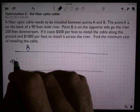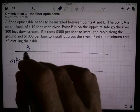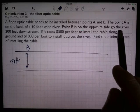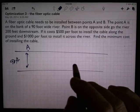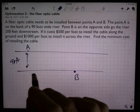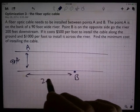So this is 90 feet. And point B is on the opposite side of the river, 200 feet downstream. So point B is over here, and apparently this distance right here is 200 feet.